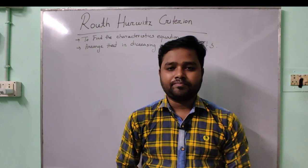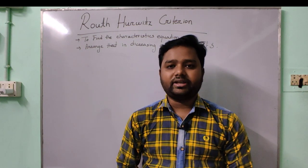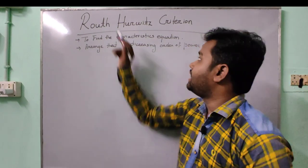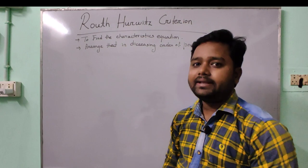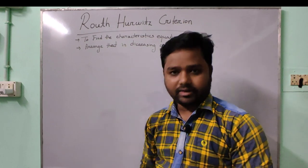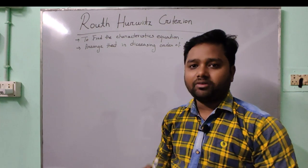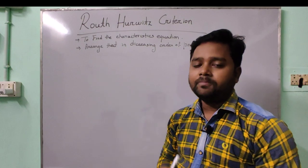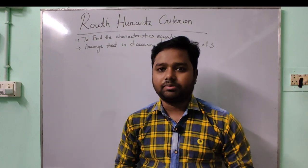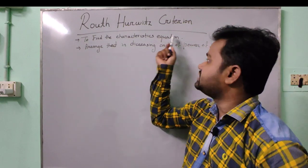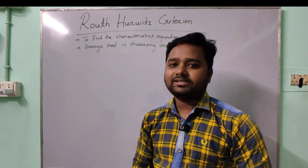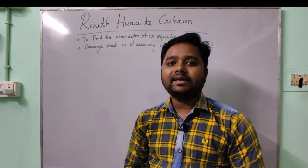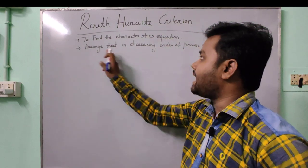Hello, welcome to TS Classes. In this video we will study about the Routh-Hurwitz stability criteria. Routh-Hurwitz criteria is the fastest process to find the stability of a control system. The first step is to find out the characteristic equation of the transfer function, and the second step is to arrange it in descending order of power of s.